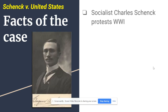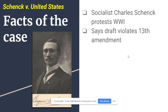The facts of the case: the person on the left-hand side is a socialist named Charles Schenck, who is protesting World War I. He argues that the military draft in World War I violates the 13th Amendment, which outlawed slavery. Schenck's argument is that by the government forcing you into the military during wartime through the draft, that's the equivalent of being a slave.